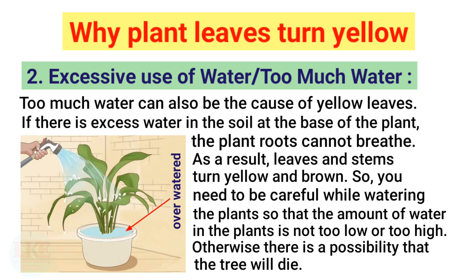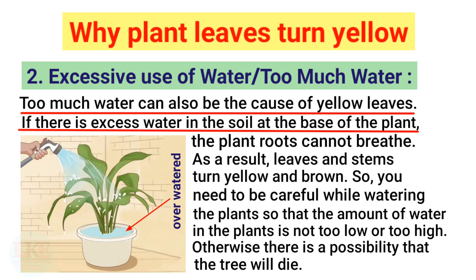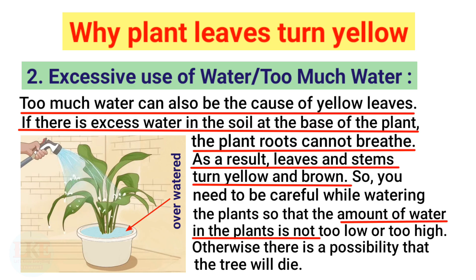You should remember that even if you give too little water to the plant there are problems, but if you give too much water, many problems can also be seen. Excessive use of water — too much water can also cause yellow leaves. If there is excess water in the soil at the base of the plant, the roots cannot breathe, and as a result leaves and stems turn yellow and brown. So you need to be careful while watering plants so that the amount of water is not too low or too high, otherwise there is a possibility that the tree will die.